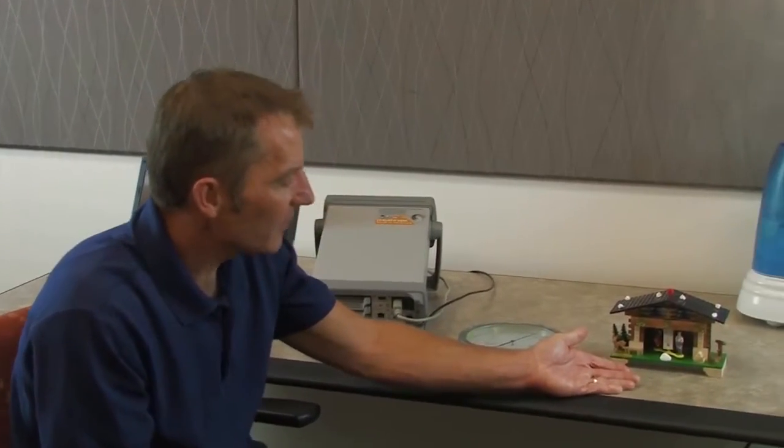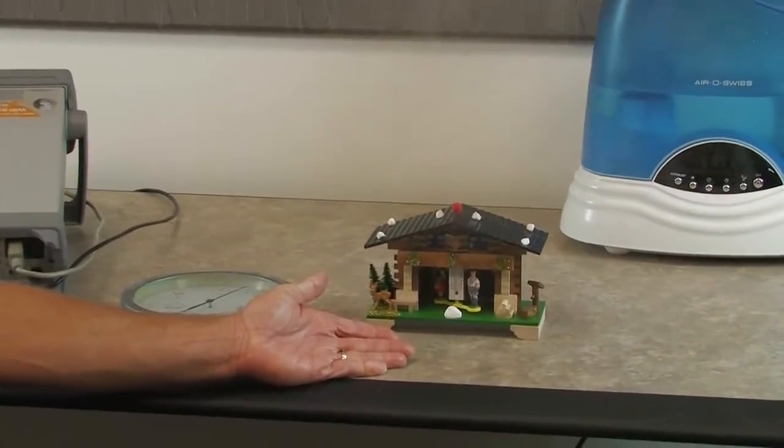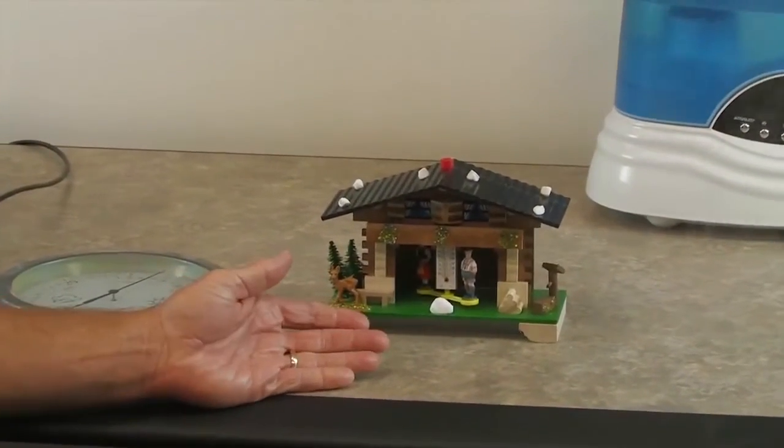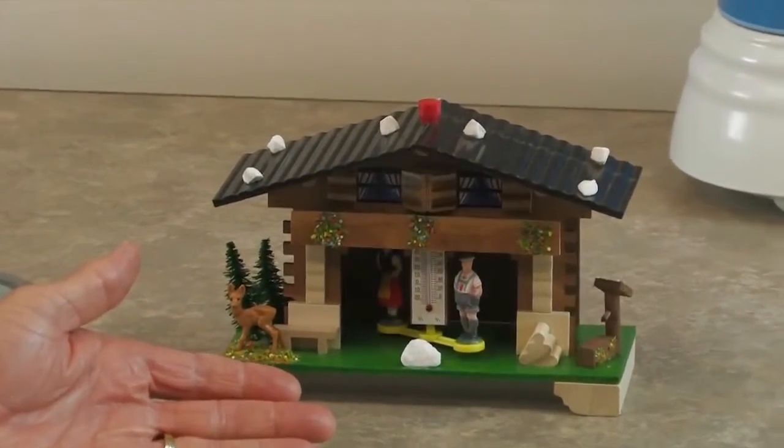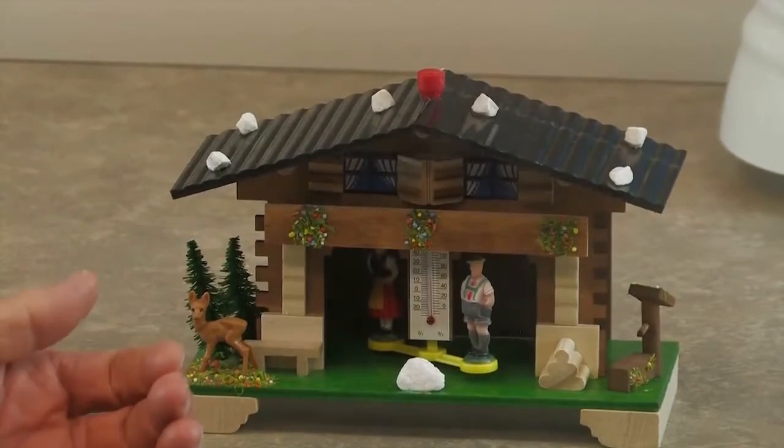I have several devices here today to measure humidity. Let's start with the German weather house. The way the German weather house works is on a wet day the male will come out of the house and the female will retreat back inside, whereas on a dry day the female will come out of the house and the male will stay inside.